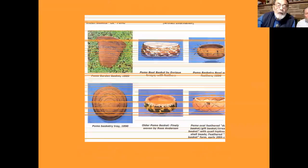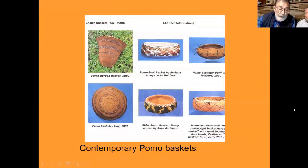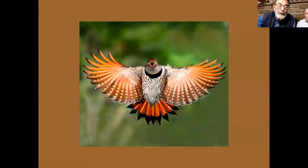Here are lovely examples of Pomo basketry. Notice the feathers woven in — a Pomo woman was obligated to weave the shaft of a red-shafted flicker into a basket if she entered her menstrual period before finishing it. This is a male red-shafted flicker, indicated by the bright red mustaches. The red-shafted flicker appears in more archaeological sites throughout the Plains than any other individual species of bird.